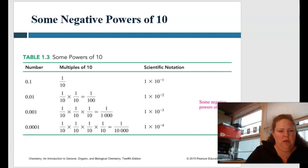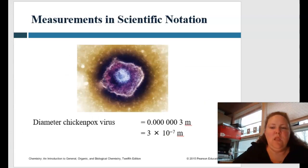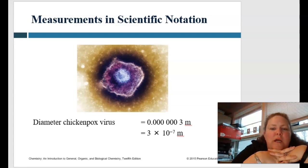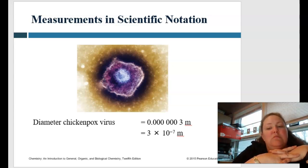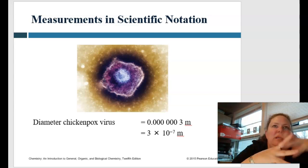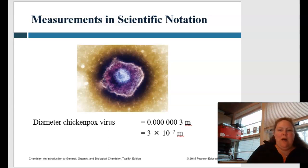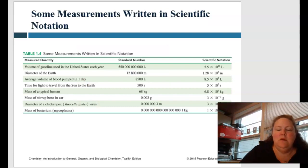This is how we do scientific notation, and we use it a lot. For example, the diameter of a chicken pox virus is very small — it would be very hard to say it's 0.00003 meters. It's a lot easier to say it's 3 times 10 to the minus 7 meters. That's why we use scientific notation — to make measurements easier to refer to.